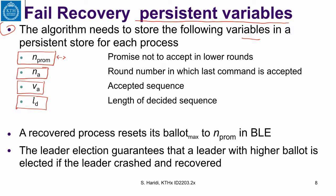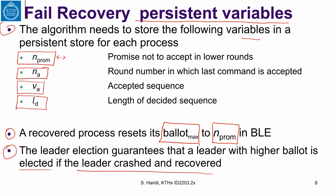Once a process recovers, it has to restart its own election component. In the election component, it should initialize or reset its ballot max — the maximum ballot it knows. It should set it to the stored promise value, because it will set the ballot to the round number of what it thought was the leader. Any subsequent election should have this ballot number or a higher ballot number. All other variables are reset as in initialization. The leader election guarantees that a leader with a higher ballot number is elected if the leader crashed and recovered.